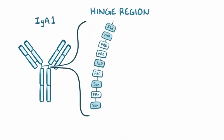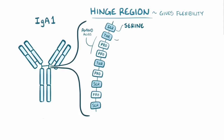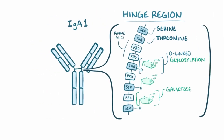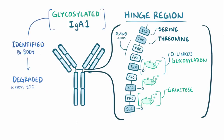The hinge region of the IgA1 heavy chain — the part that gives the antibody a bit of flexibility to bind to multiple antigens without being torn apart — is made up of a string of amino acids. Among these are serine and threonine residues, which are O-linked glycosylated, meaning they have a sugar molecule, specifically galactose, attached to their oxygen.